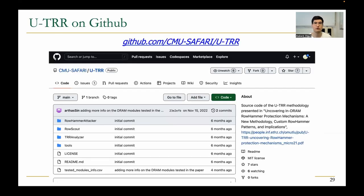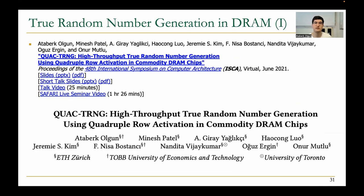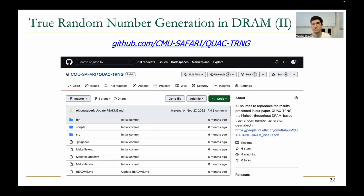We have open-sourced all the experimental resources used in the last paper at this link. An even more recent study understood how Rowhammer behaved under reduced DRAM voltage or word-line voltage. We also used the testing infrastructure to demonstrate new undocumented functionality in existing DRAM chips, and used this functionality to develop a high-throughput true random number generator that outperformed the state-of-the-art.